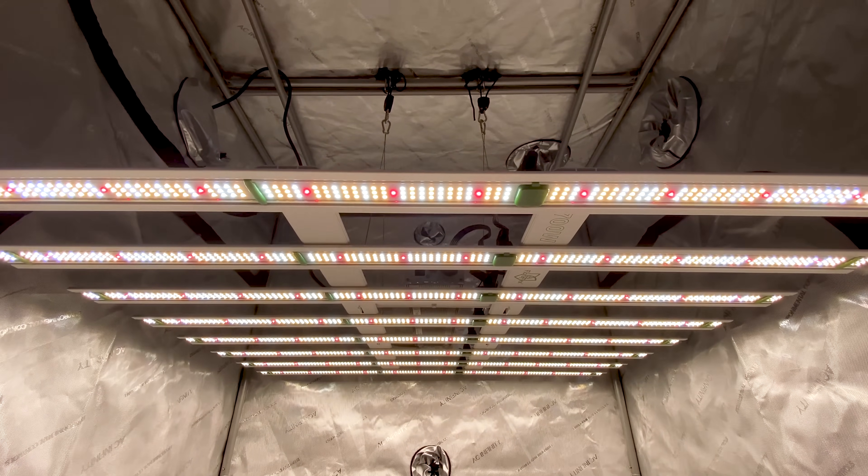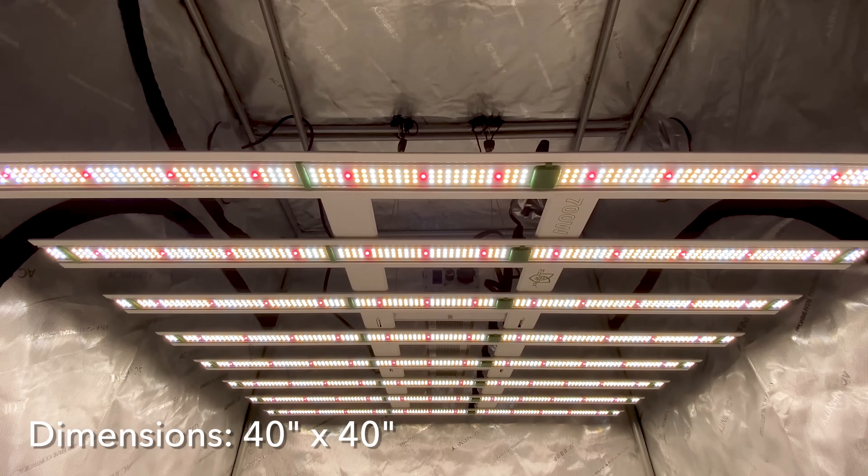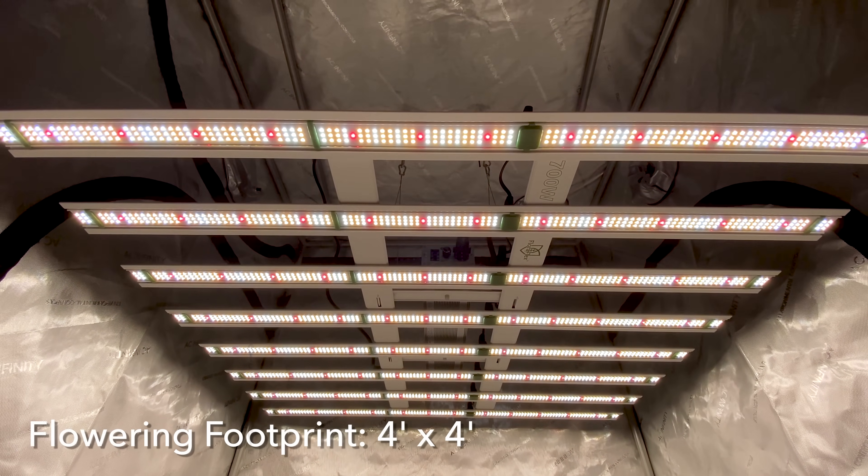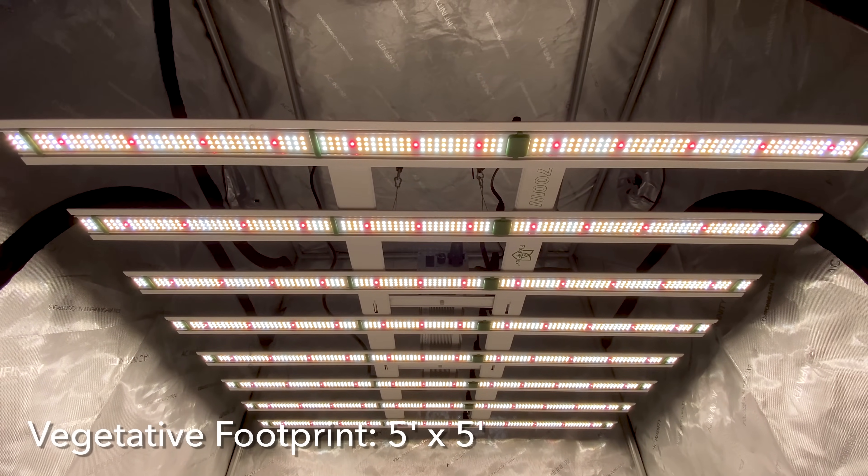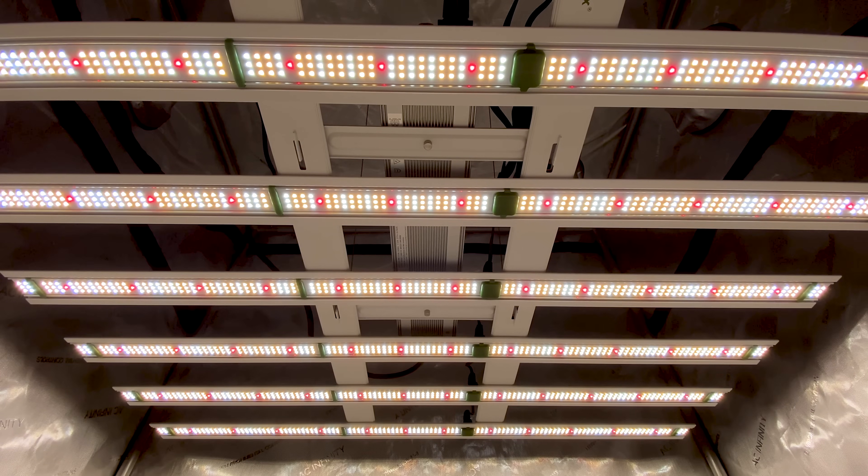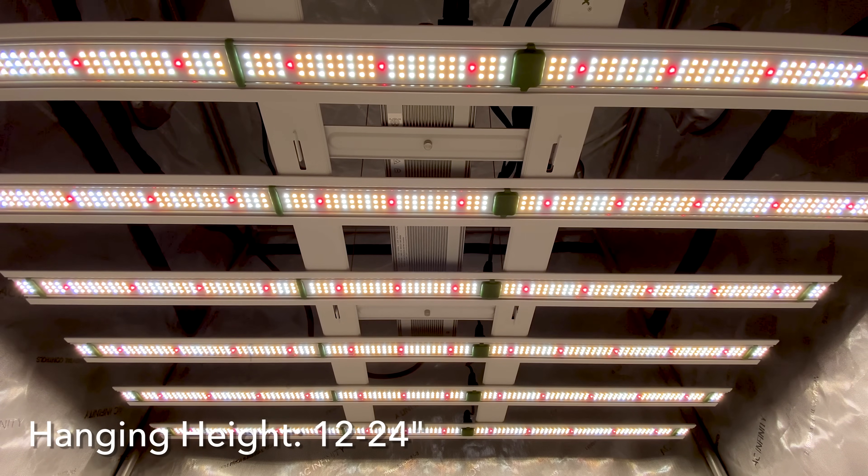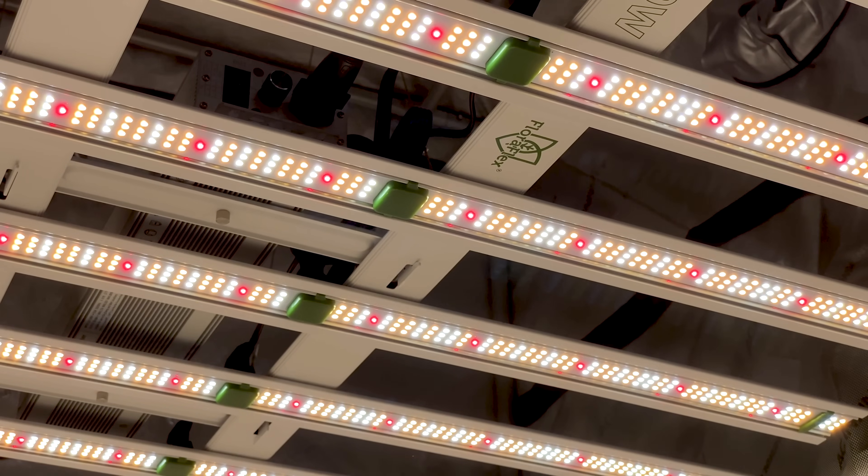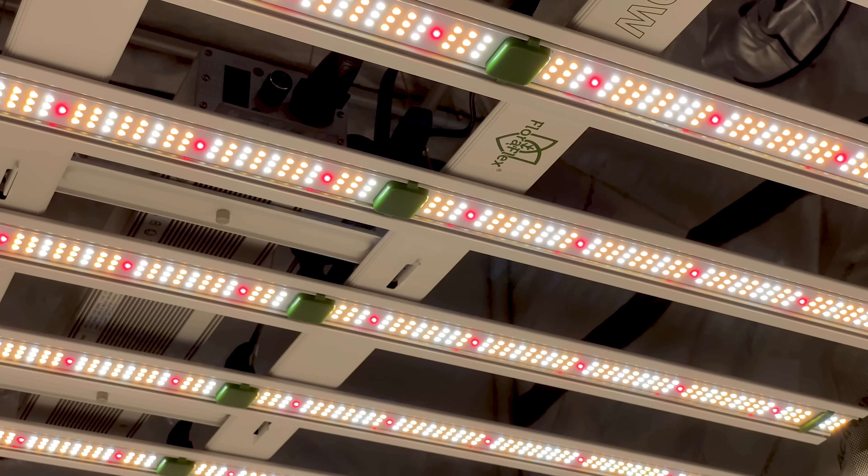This 700W LED grow light measures 40x40 inches and is designed to cover a 4x4 area for flowering and a 5x5 area for vegetative growth. For optimal flowering, hang or mount the light at a height of about 12-24 inches. During the vegetative stage, dim the light to 50% at these same heights.